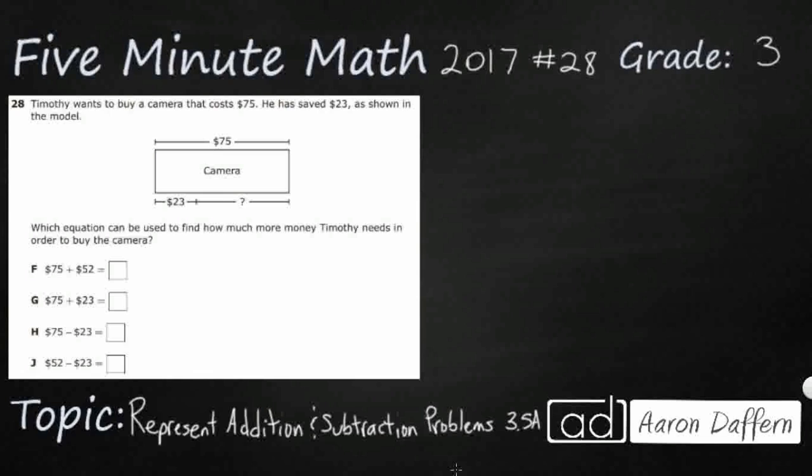So we have a model right here that is going to actually be very helpful for us when we are looking at solving this problem. Timothy wants to buy a camera that costs $75. That's why we have this camera right here. And you see the 75 goes across the entire, so that's your total. The total cost is $75.